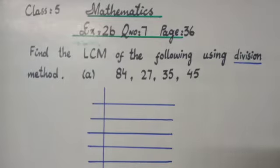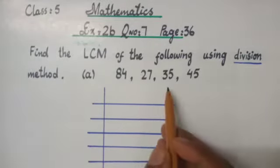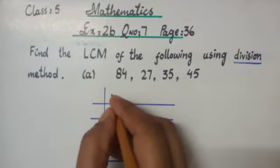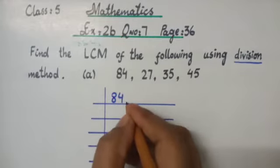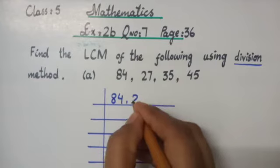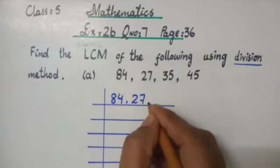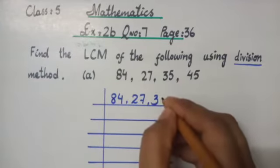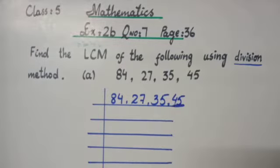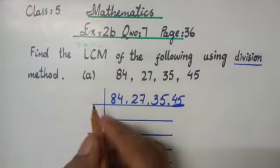Now, I have to write all these digits at the top of these lines. Number 1, I have 84, right? Then 27, 35, 45. I have to find out the Prime Factors for this.